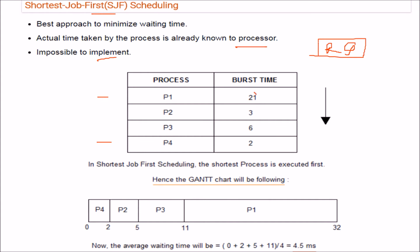In our example with burst times 21, 3, 6, and 2: P4 is the shortest job so it goes first, then P2 with 3, then P3 with 6, and finally P1 with 21. Arranged in ascending order, the waiting times are: P4 waits 0, P2 waits 2, P3 waits 5, and P1 waits 11 milliseconds.